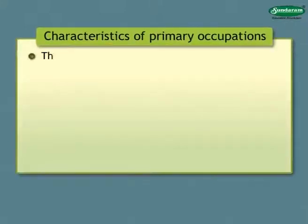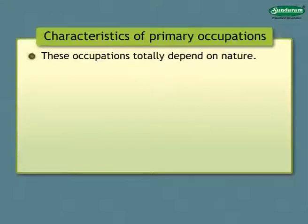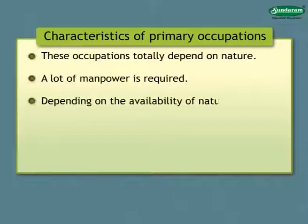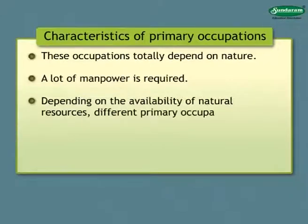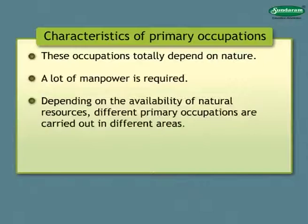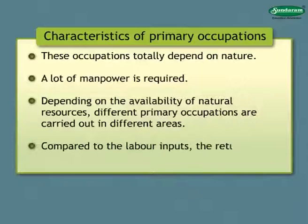The following are the characteristics of primary occupations. These occupations totally depend on nature. A lot of manpower is required. Depending on the availability of natural resources, different primary occupations are carried out in different areas. Compared to the labor inputs, the returns are quite low.